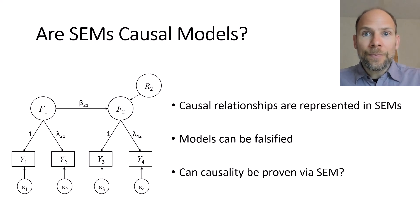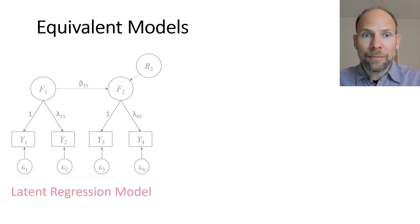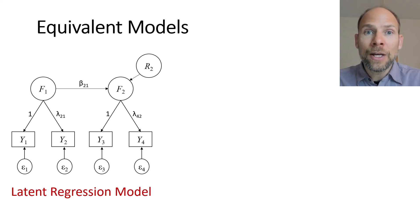To answer that question — can we prove causality in SEM — it is useful to consider equivalent models. I have a separate video on equivalent models where I talk about this issue in more detail, so you can check that out as well. Here I'm only going to show you a simple example of two equivalent models, starting with the same latent regression model where F1 is hypothesized to cause F2.